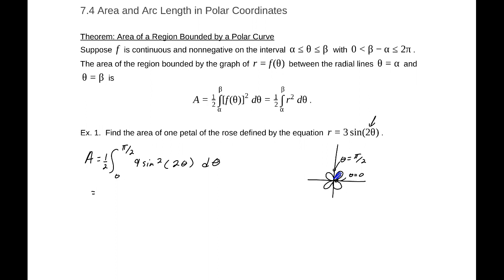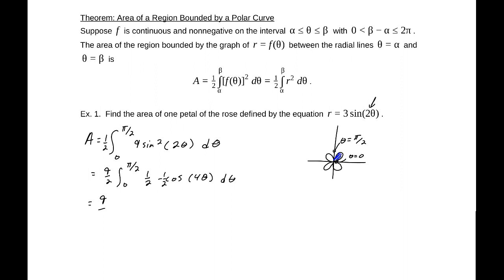Now it turns out with polar coordinates, all of those trigonometric integrals we did previously, those techniques come in very handy. So we know that sin squared we can rewrite. I'm going to factor the 9 out: 9/2 integral from 0 to π/2 of sin²(2θ), which we said previously was 1/2 - 1/2 cos(4θ). Let's factor that 1/2 out as well, so this will be 9/4 integral from 0 to π/2 of 1 - cos(4θ) dθ.